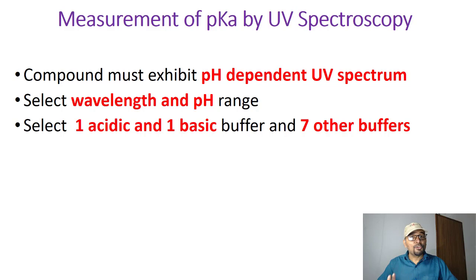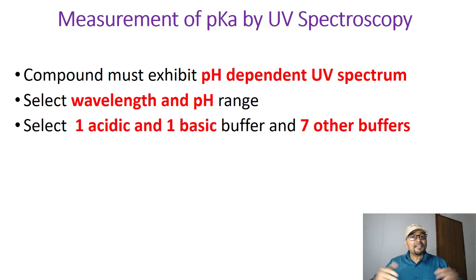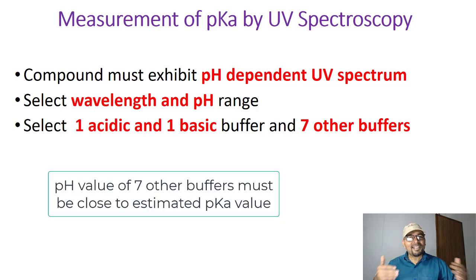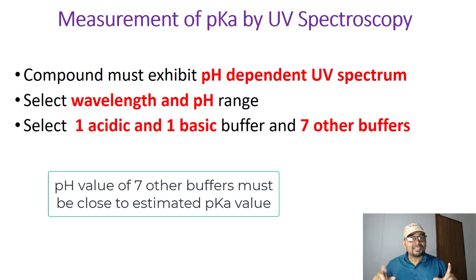The second requirement is that you need to select the appropriate seven other buffers. During the selection of these seven buffers, their pH values must be close to the estimated approximate pKa values. This statement is very important — the pH of the seven buffers must be close to the estimated rough pKa value.